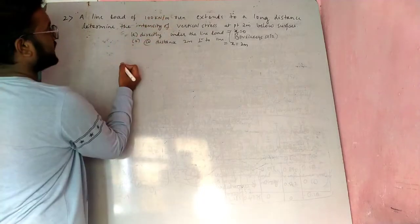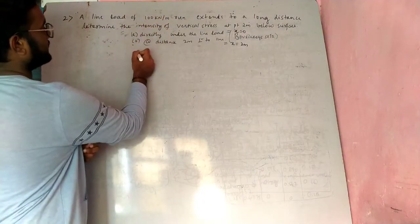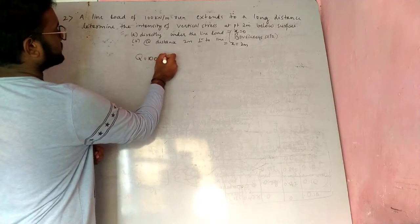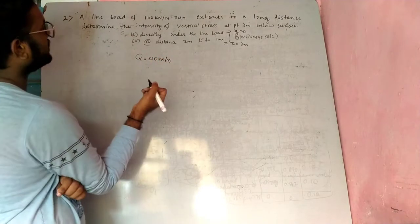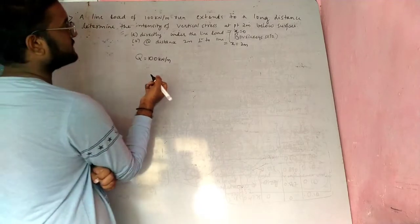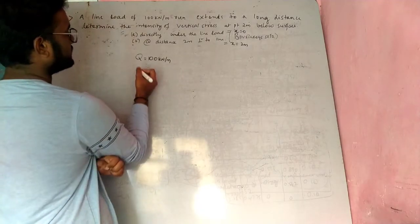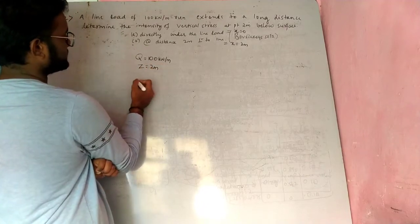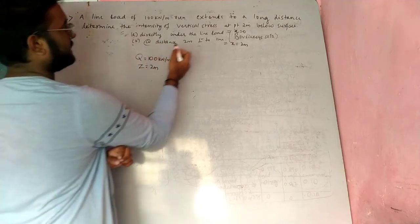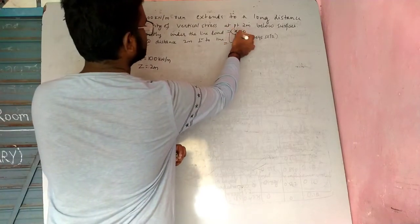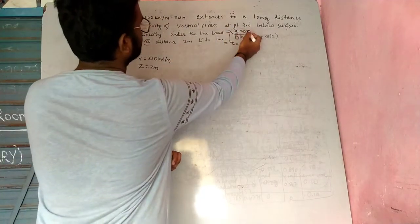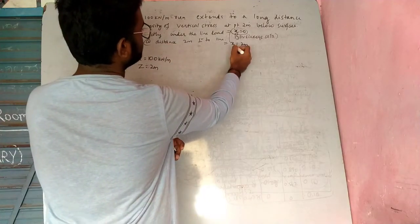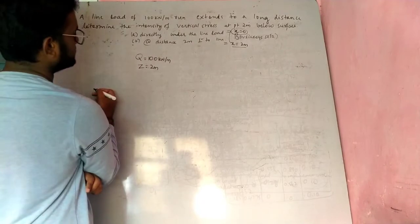Next problem: a line load of intensity q equal to 100 kN per meter run extends a long distance. Determine the vertical stress at z equal to 2 meter below the surface — directly under the line load where x equals 0, and at a horizontal distance x equal to 2 meter perpendicular to the line load.